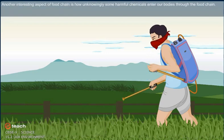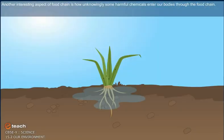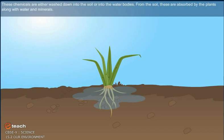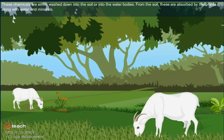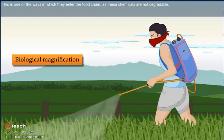Another interesting aspect of food chain is how unknowingly some harmful chemicals enter our bodies through the food chain. These chemicals are either washed down into the soil or into the water bodies. From the soil, these are absorbed by the plants along with water and minerals. This is one of the ways in which they enter the food chain, as these chemicals are not degradable.